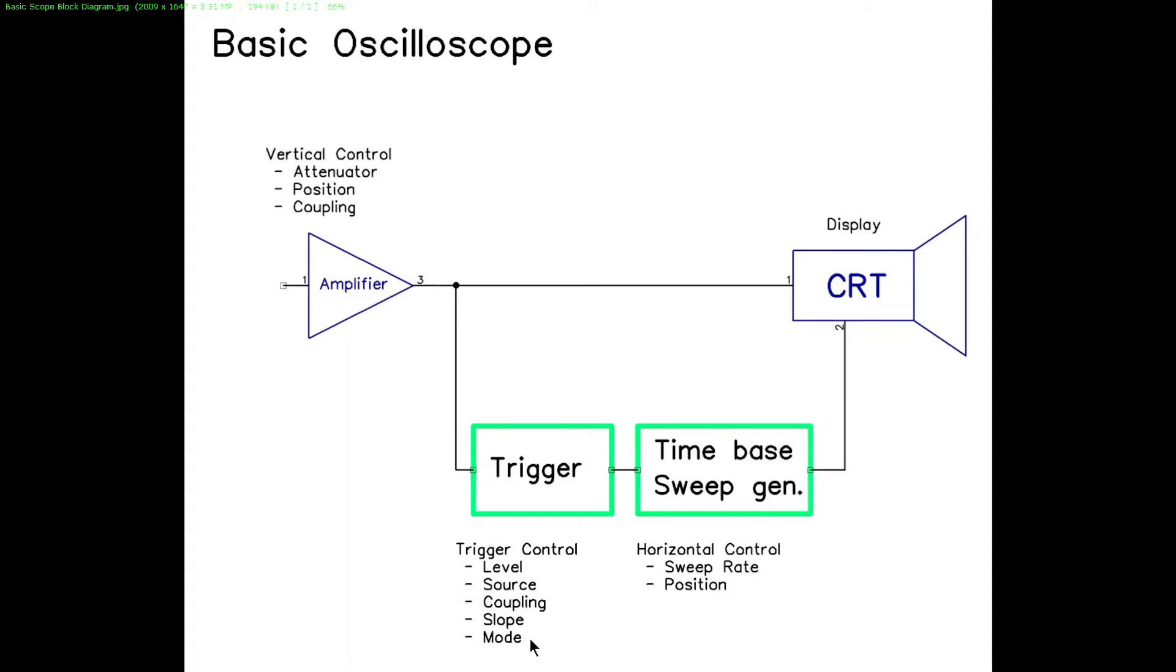And we can also choose the mode. The mode is usually two modes minimum. There could be quite a few more, but a minimum you'll have automatic. What automatic will do is it'll force a sweep regardless of whether there's a trigger condition or not. But if there is a trigger condition, it will synchronize to that trigger condition. But at least you'll have a display of the trace all the time, and that's usually handy for initially adjusting the trigger to get it right. And then there's the normal mode. That'll only trigger a sweep if the trigger condition is met.